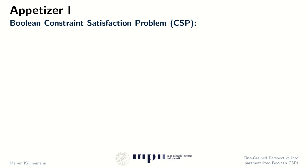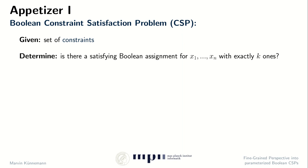In particular, I will first introduce the problem setting, which is the setting of Boolean constraint satisfaction problems. Here we are given a set of constraints on Boolean variables x1 through xn, and the task is to determine whether there's a satisfying assignment to these variables that sets precisely k of them to 1 and the rest to 0. We call such an assignment a weight k assignment.